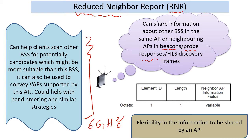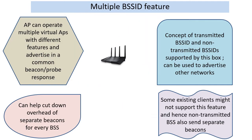RNR, which is already there in the standard but is not enforced by any certification mechanism, could come into play strongly as we try to use the 6 gigahertz spectrum more efficiently. An AP in 2.4 and 5 gigahertz, where the station might first scan, could inform about 6 gigahertz networks — and this need not be restricted to the same box in the case of RNR. There is a lot of flexibility in what information needs to be shared.